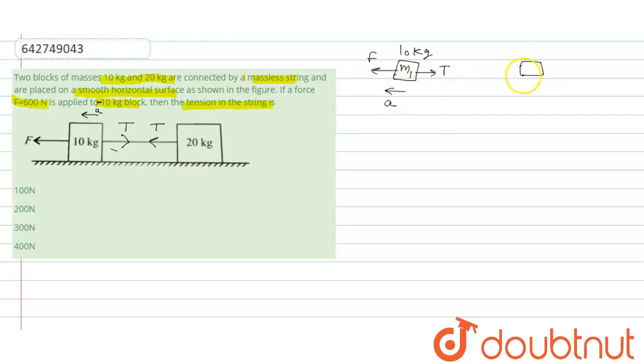For mass M2 which is 20 kg, tension is acting in this direction and acceleration in this direction. We can write equations as: F minus T equal to M1a and for this T equal to M2a.